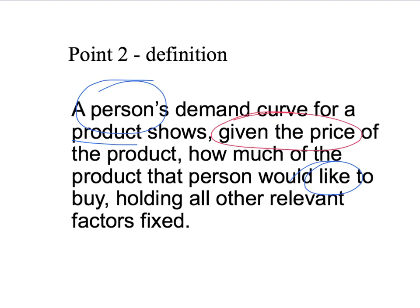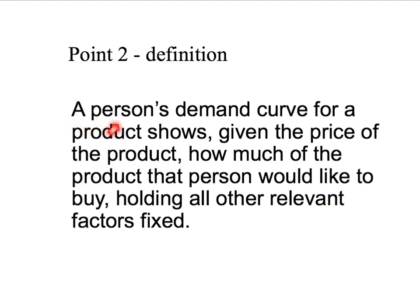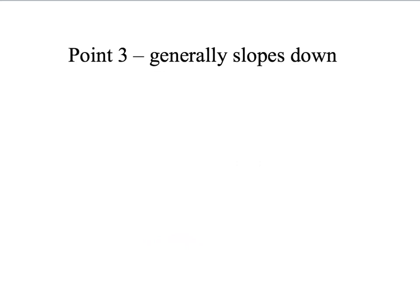Finally, we're going to be holding all other relevant factors fixed. This includes the person's income or their wealth, the prices of other goods such as bananas or pears, their expectations — are apples good for them or bad for them — and so on. Anything else that could be relevant is held fixed. A person's demand curve for a product shows, given the price of that product, how much of the product that person would like to buy, holding all other relevant factors fixed. Our third point is one of our helpful assumptions: demand curves generally slope down, and that's the way we're going to be drawing them in this presentation.